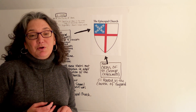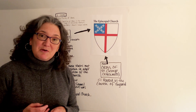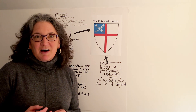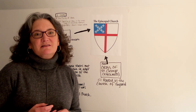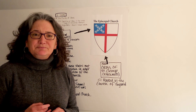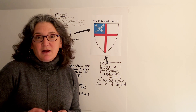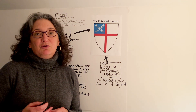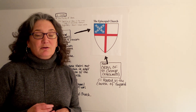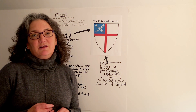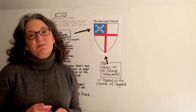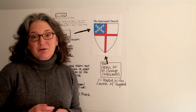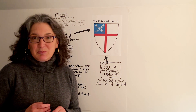The Anglican communion is made up of over 85 million people around the world, 165 or more countries, 44 different churches. What you may not know is that the largest piece of the Anglican communion by population and largest growing population in the Anglican communion is found in sub-Saharan Africa.